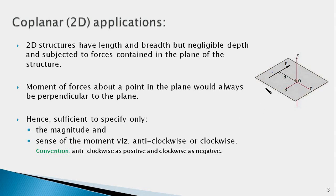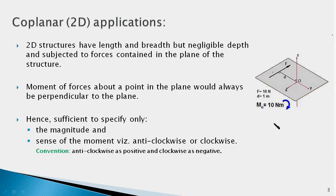For example, if the force F is 10 newtons and the perpendicular distance from point O to its line of action is 1 meter, then the magnitude of the moment is F times d, which is 10 newton-meters. Looking from the top, the sense of the moment would be clockwise because this force F would try to rotate the object clockwise. When adding several moments along the same axis, we assign positive signs to anti-clockwise moments and negative signs to clockwise moments. This is the convention, though you may decide your own sign convention.